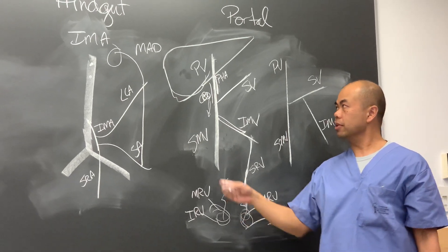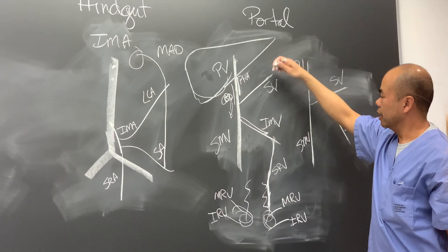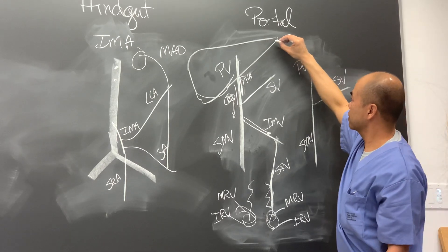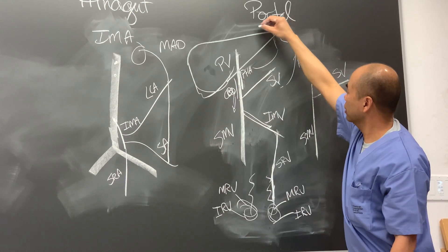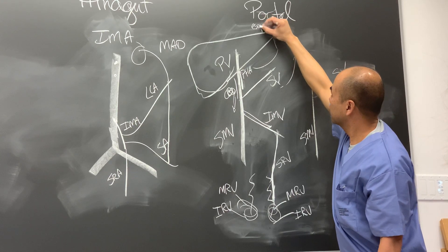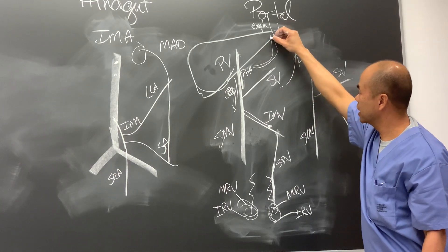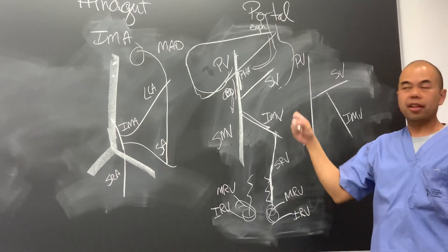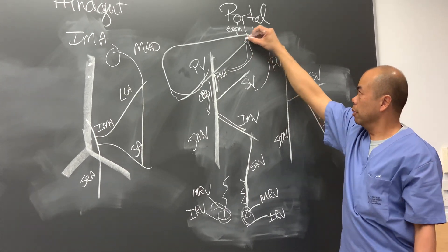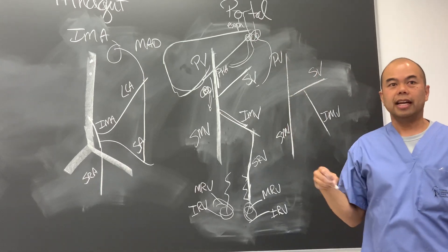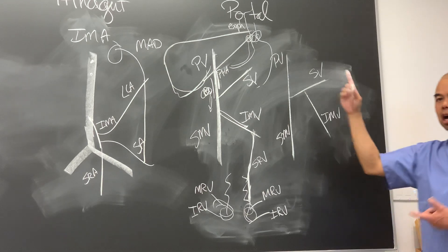Another common site of porto-systemic anastomosis is via the portal vein draining into the esophagus. Esophageal veins are cable veins, and they connect with branches of the left gastric vein. Blood pooling in this region causes esophageal varices, and the patient vomits blood.